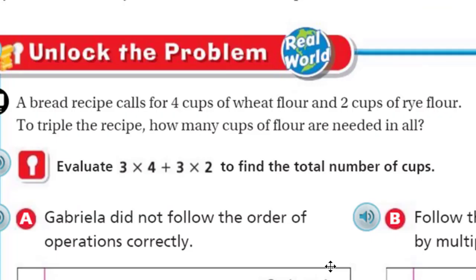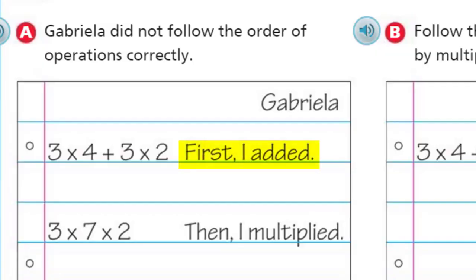But I'm going to continue nonetheless. It says evaluate 3 times 4 plus 3 times 2 to find the total number of cups. So I'm looking at this expression, and I'm thinking about that order of operations. That expression represents the problem we just had, because it did ask that we triple the recipe, and triple means 3 times. Now, it does say here, Gabriela did not follow the order of operations correctly.